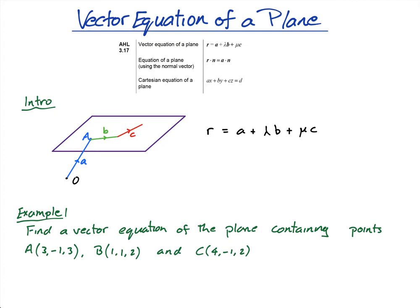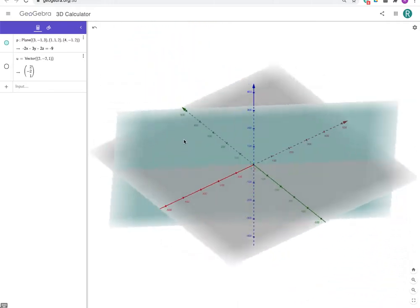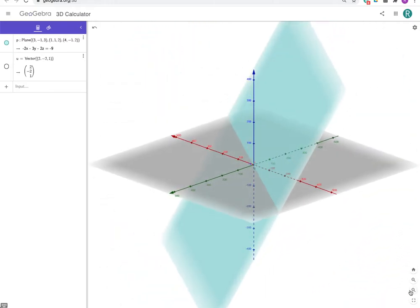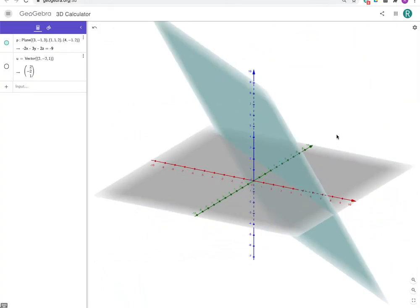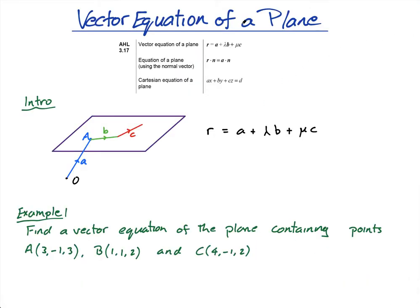In this lesson we're going to find the vector equation of a plane. Things get really interesting and perhaps a little complicated, but hopefully not too bad. A plane is a flat surface — think of a wall, a ceiling, or a floor. In GeoGebra it looks something like this, and like a straight line, a plane goes on forever.